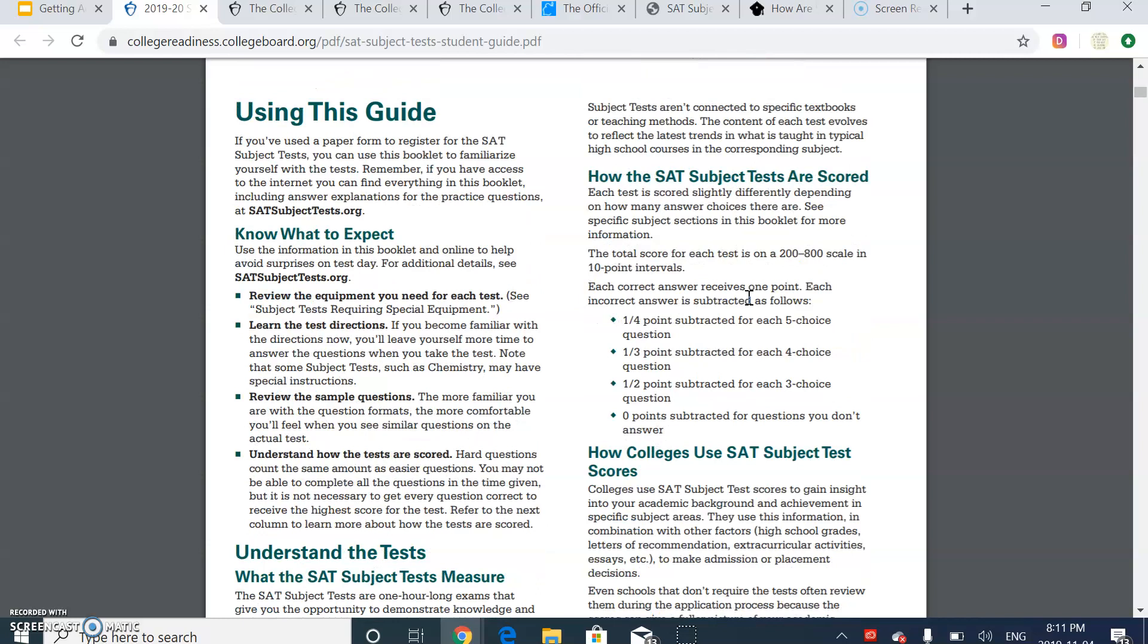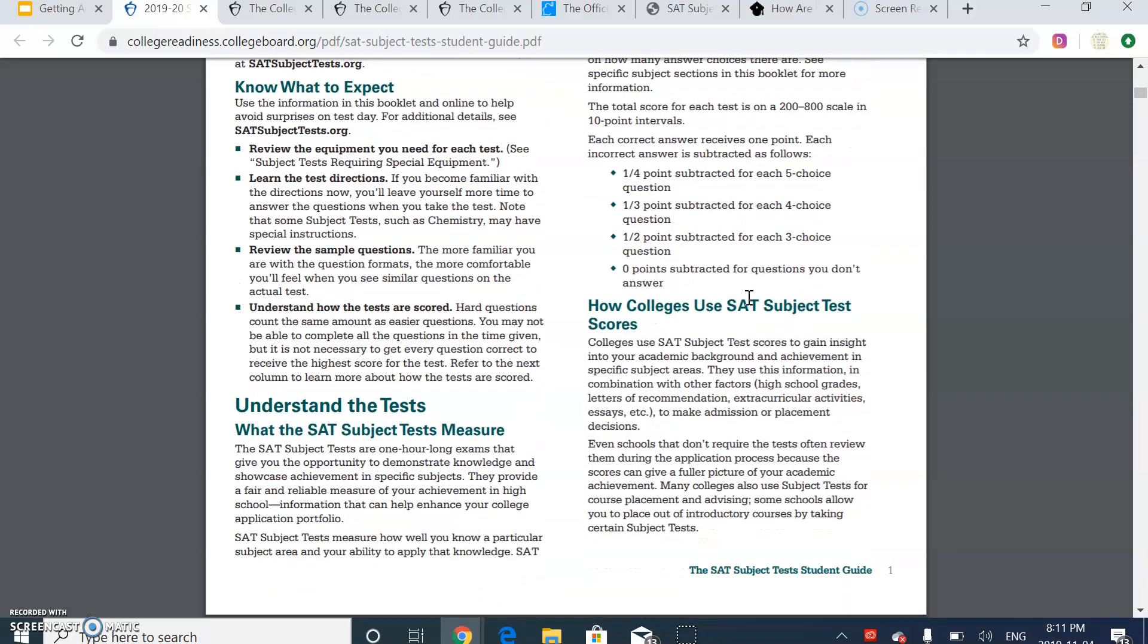Basically, they tell you that you're going to lose points for getting a question wrong. And they do have five choice questions. So if you get a question wrong, you lose 0.25 points. But if there's a four choice question, you're going to lose one-third of a point, basically. This is what you call negative marking.